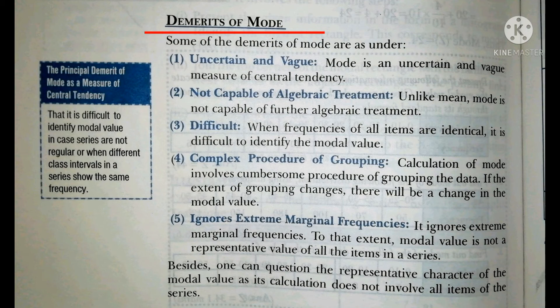Fourth is Complex Process of Grouping. Calculation of mode involves a cumbersome process of grouping the data. Sometimes when we use mode, a number of procedures are involved in which we group the data. If the extent of grouping changes, there will be a change in the modal value.